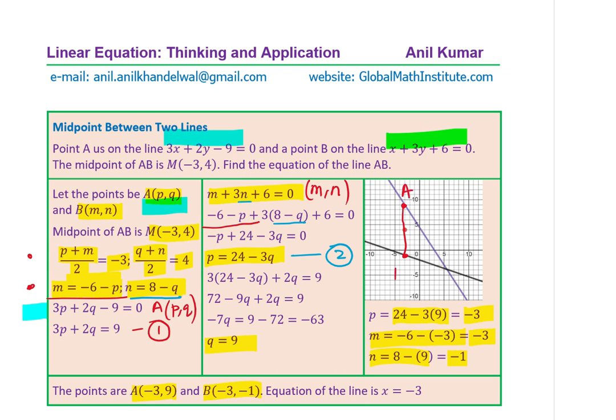So we have a vertical line where the coordinates of A are (-3, 9) and coordinates of B are (-3, -1). And clearly, the equation should be what? Well, the equation has to be vertical line. X value is constant, which is -3. And therefore, we get the equation of the line as x equals -3. So that is how we could solve such a question.